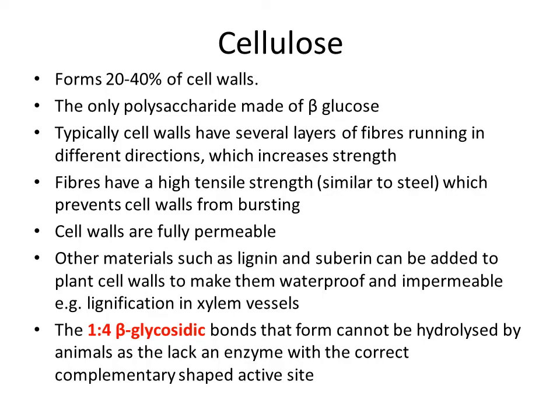To summarise cellulose: it makes up 20–40% of cell walls and is the only polysaccharide made of beta glucose that you need to know for AS level — remember this, as it comes up regularly. Cell walls have several layers of fibres running in different directions for increased strength, with high tensile strength similar to steel, preventing the cell from bursting. Cell walls are fully permeable, but other materials such as lignin and suberin can be added to make them waterproof and impermeable. Lignin is laid down in the gaps between cellulose, lignifying xylem vessels, causing the interior to become cut off, the cell inside to die, and forming a hollow tube that carries water.